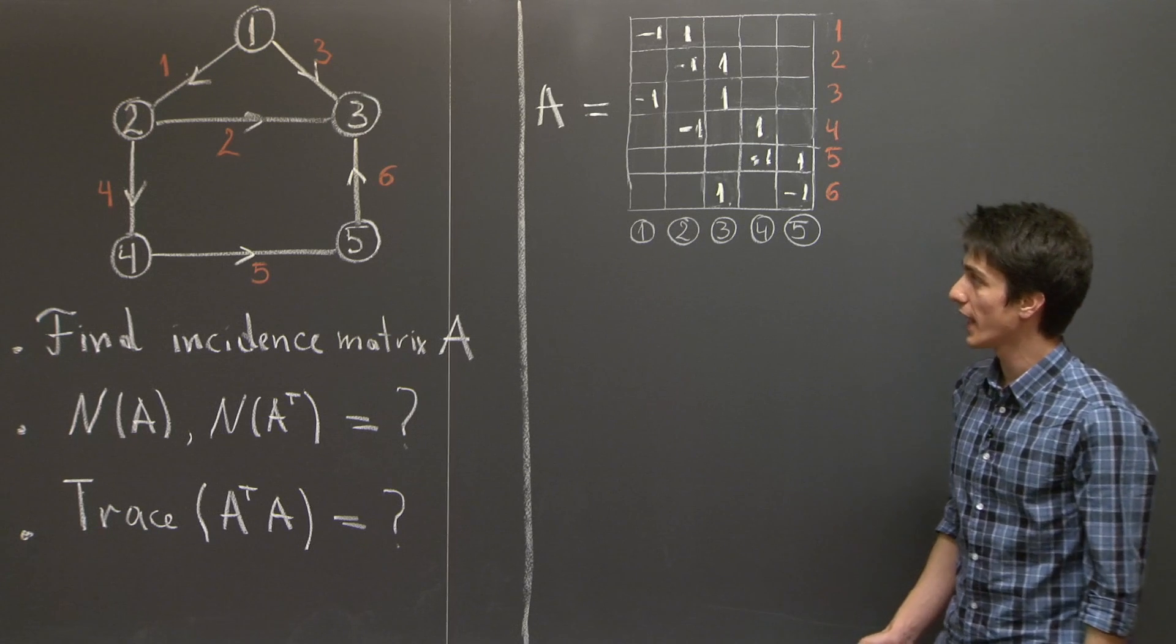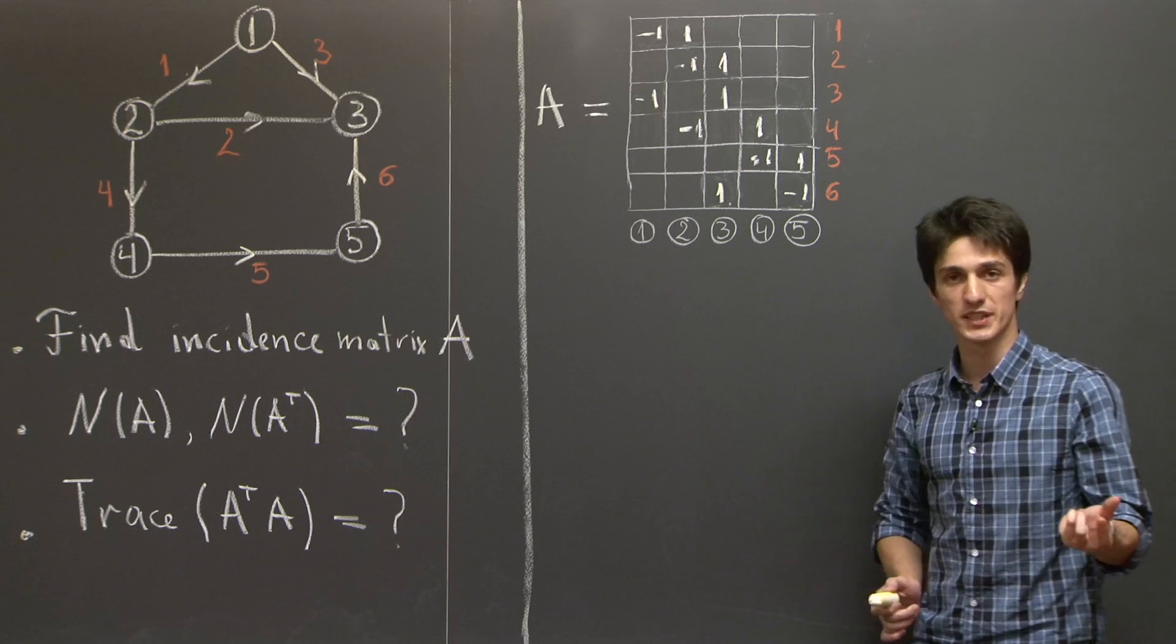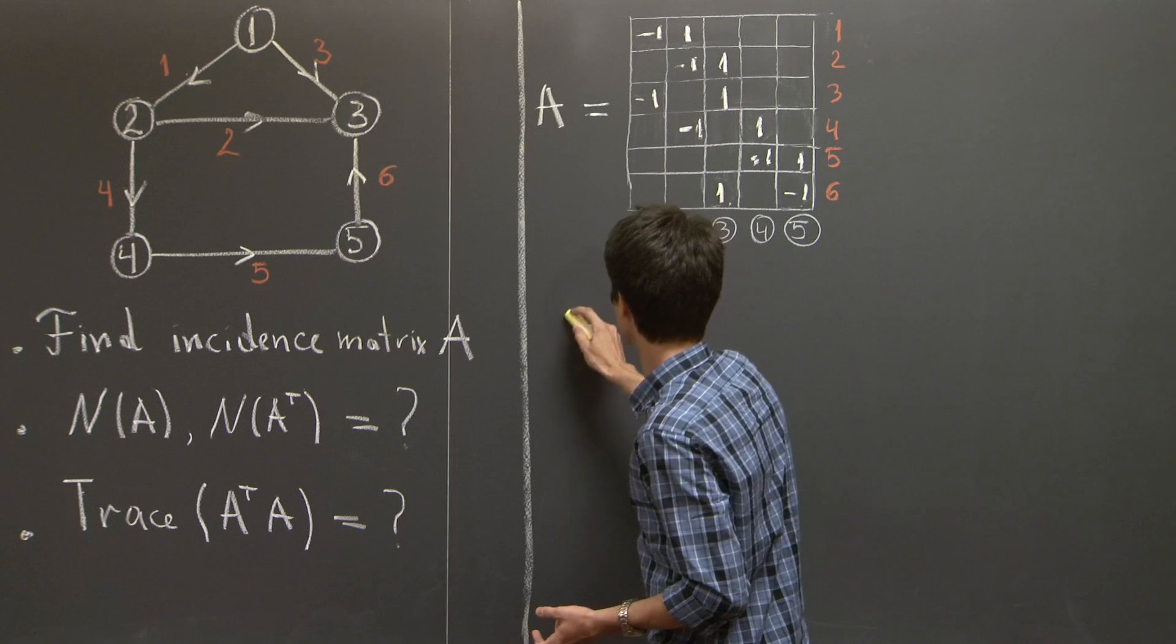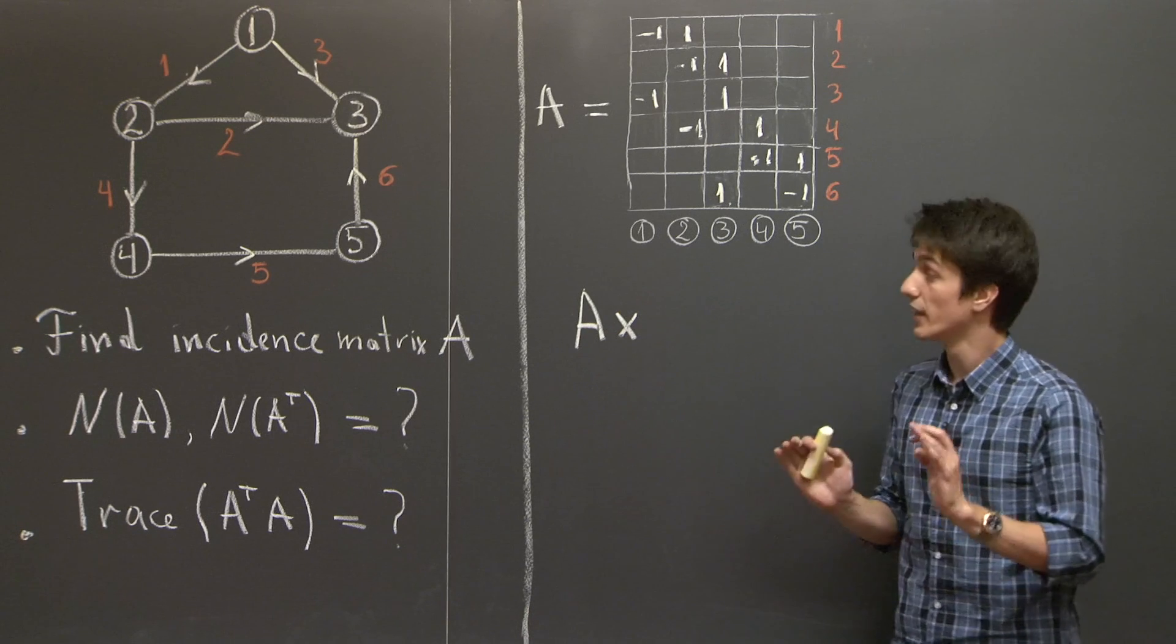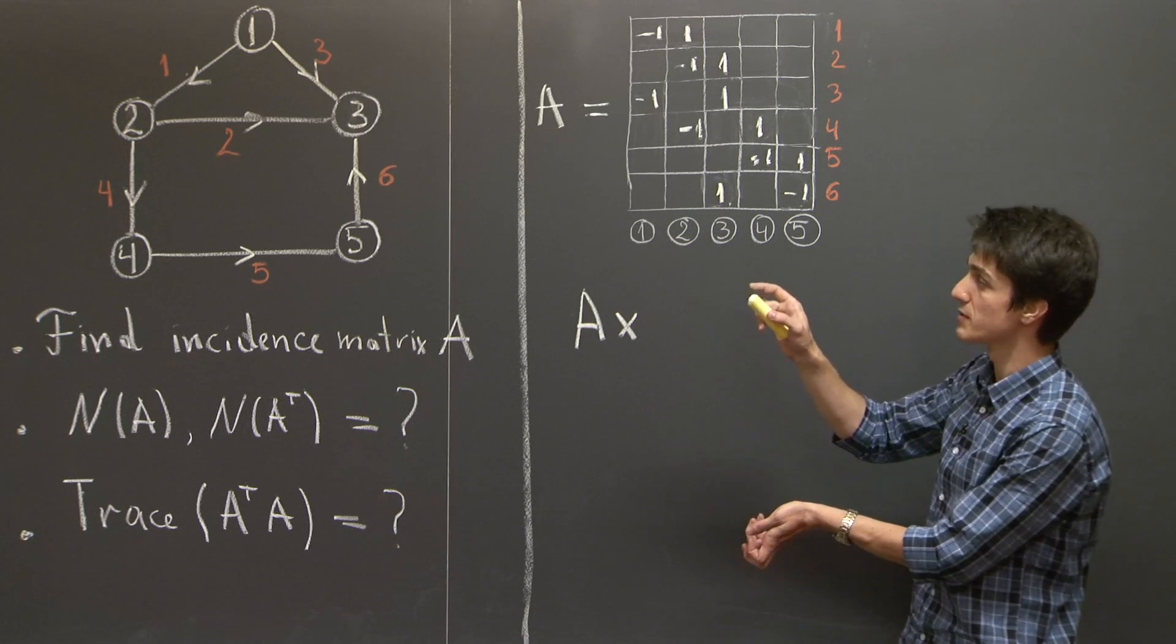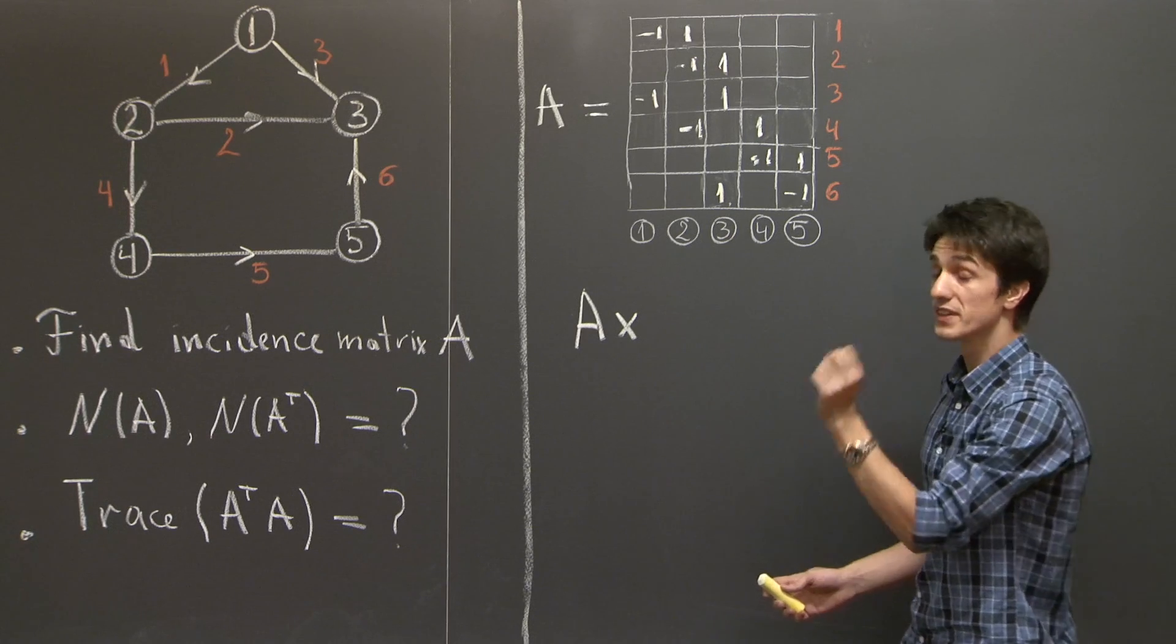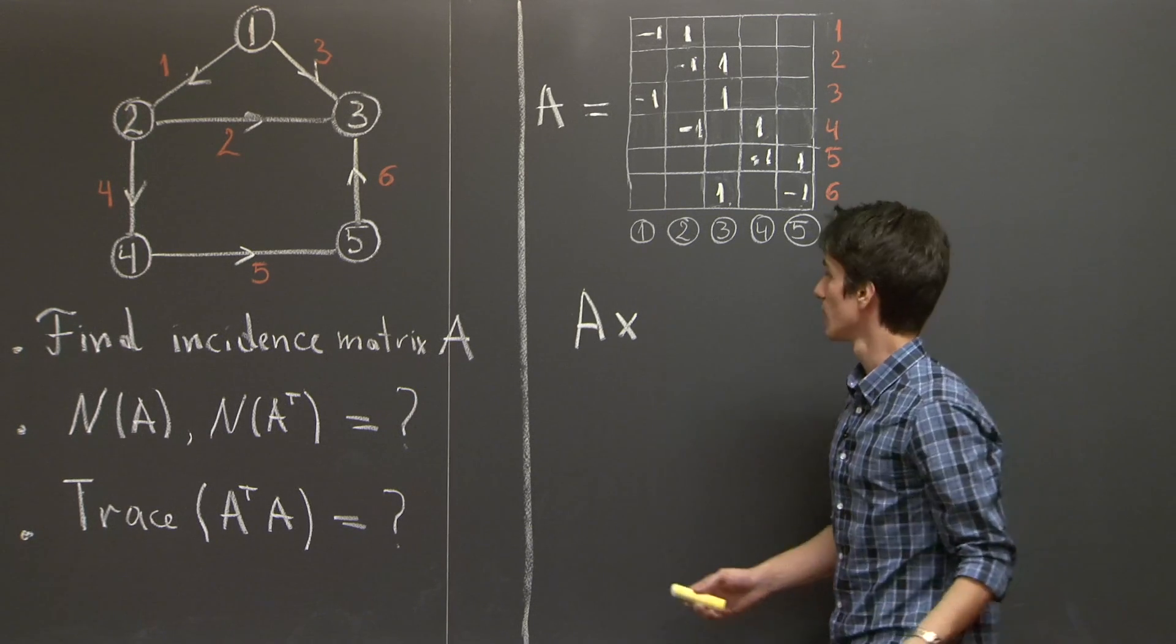and to assign to each of the nodes an electric potential. If we collect all the electric potentials in a vector x, then A times x is a vector with as many entries as there are edges,